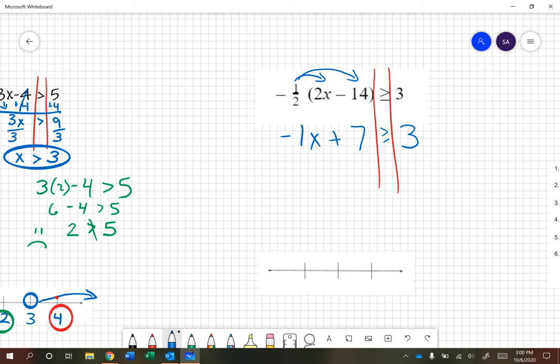And then I'm going to follow PEMDAS backwards and inverse operation, so subtract 7. I have a negative 1x is greater than or equal to negative 4. And then my railroad tracks are not quite long enough here. And then I'm going to divide by a negative 1. Divide by a negative 1 right here.